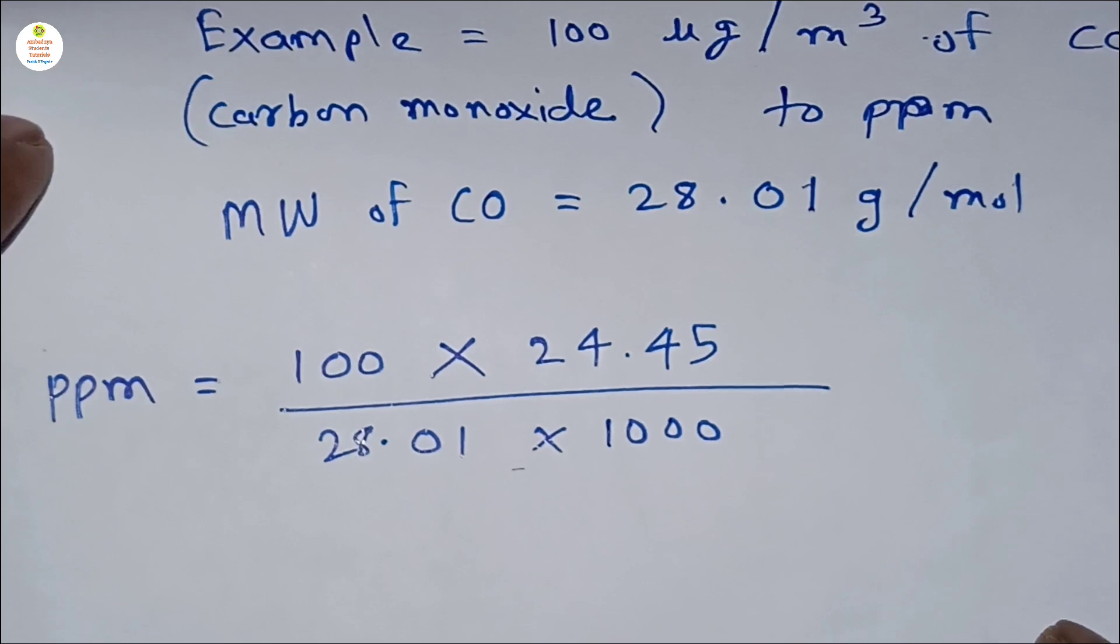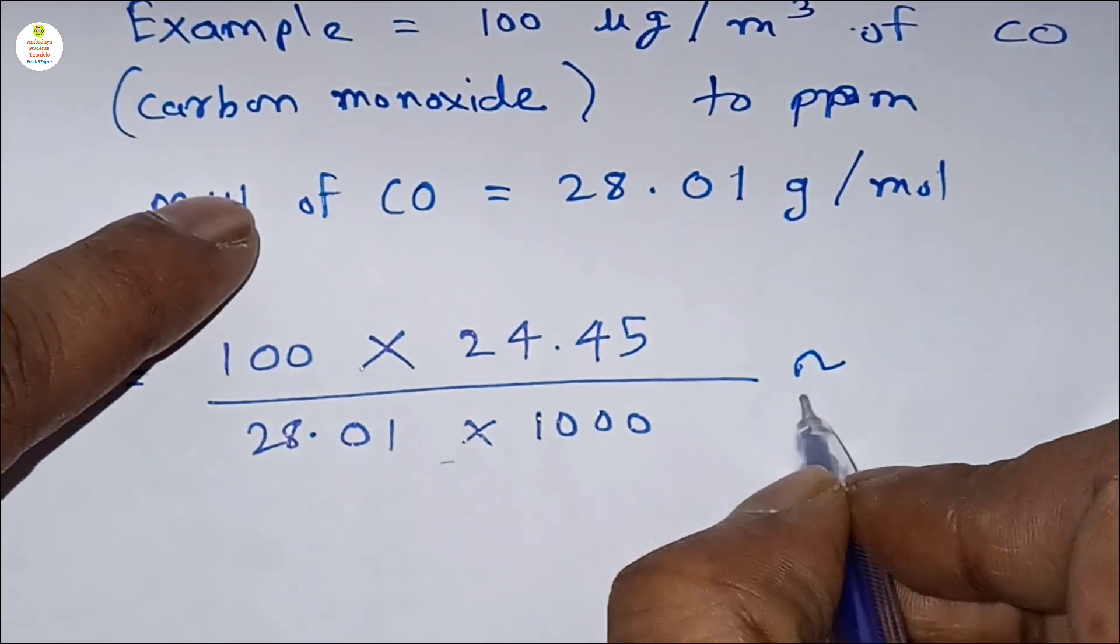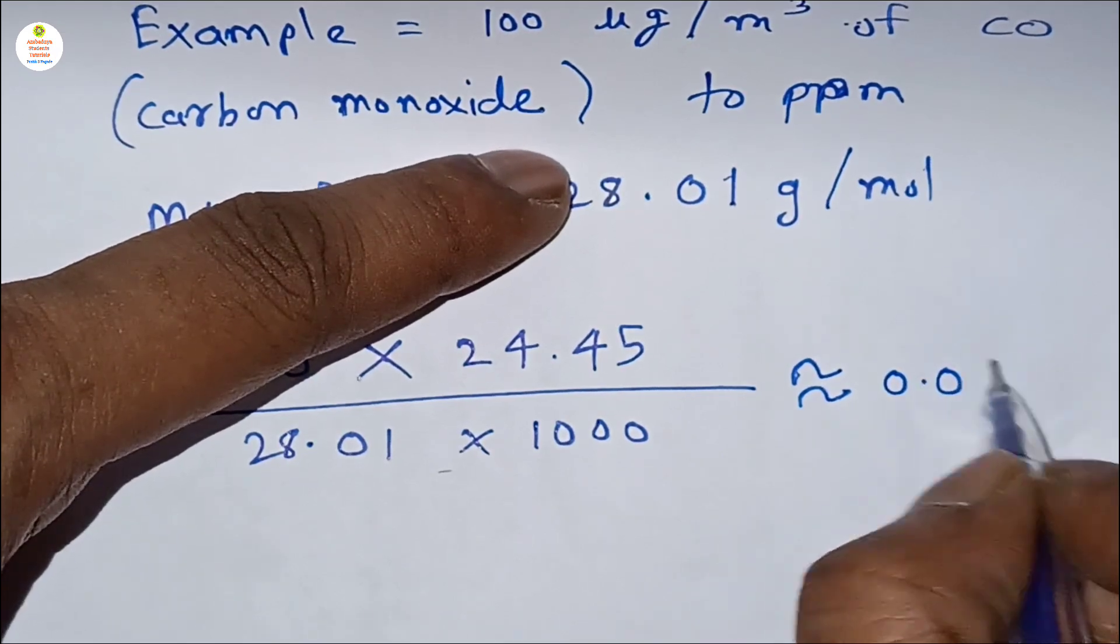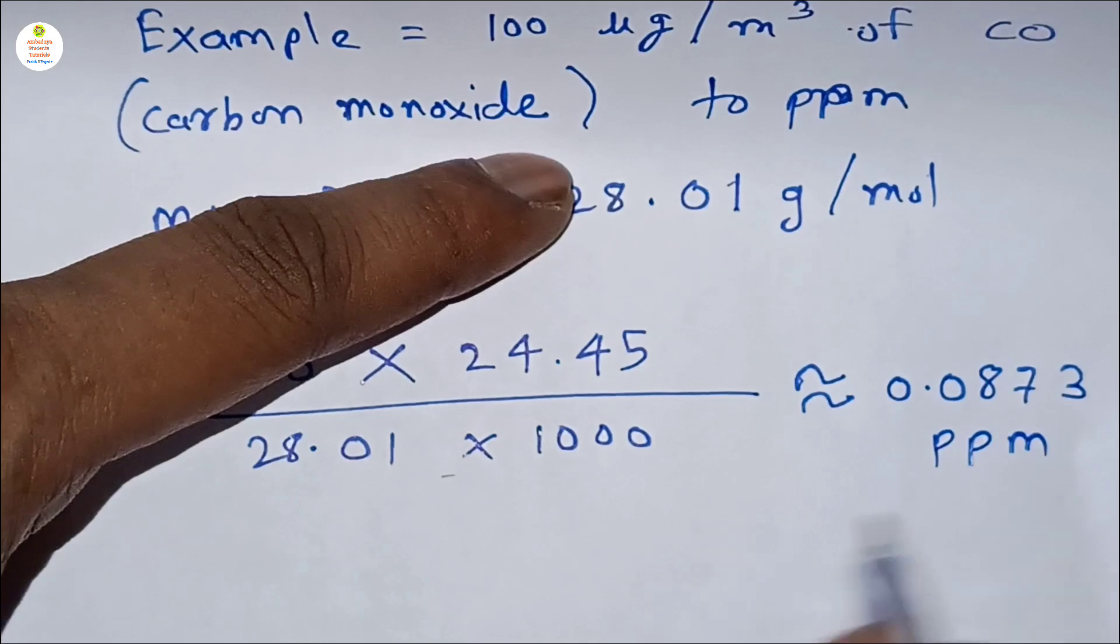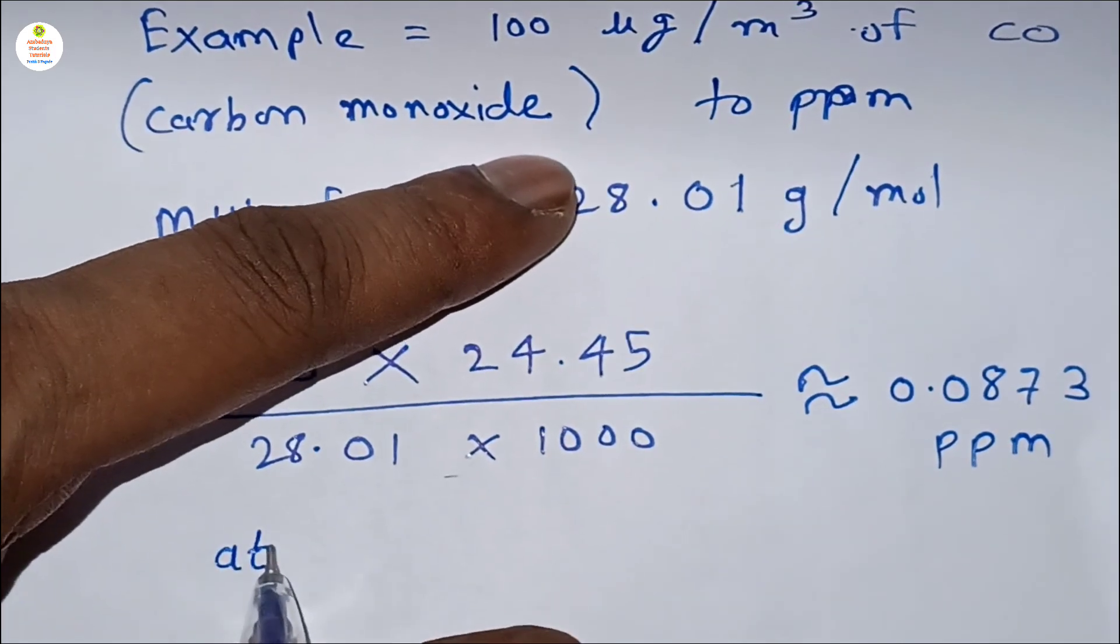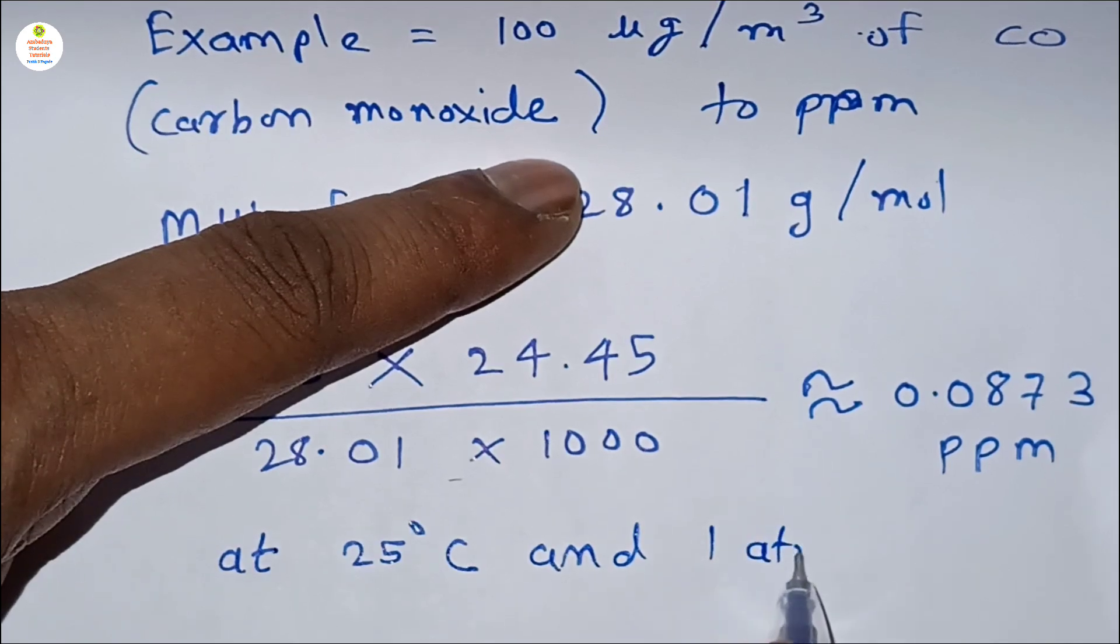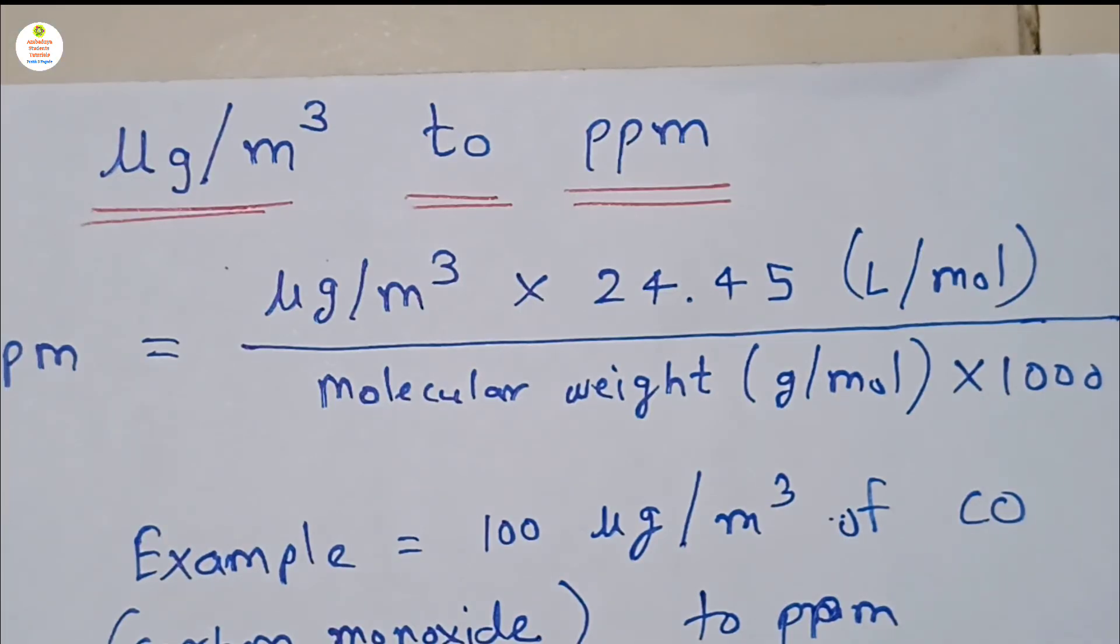So after calculating all these terms in the calculator, we will get here approximately value is equal to 0.0873 ppm, which is at 25 degrees Celsius and 1 atmosphere.